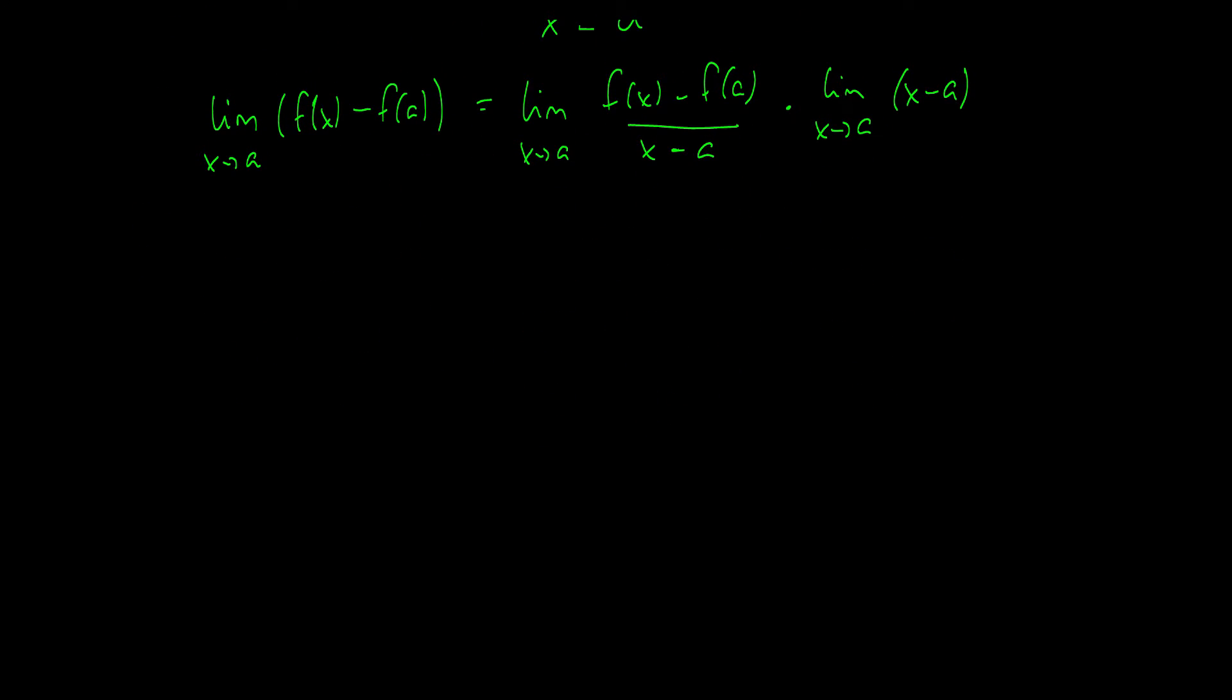So what do we know at this point? We know that this part right here is equivalent to f prime of a, using our definition of a derivative, and the limit as x goes to a of this portion here is equal to a minus a, which I will just rewrite right now, we know that is zero. So f prime of a times zero is equal to zero, so the limit as x goes to a of this thing right here is equal to zero, therefore we have proved our theorem.